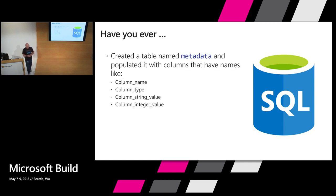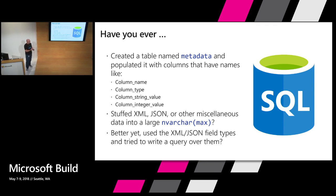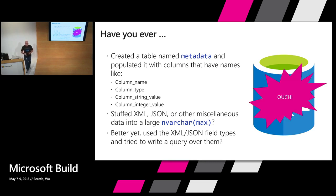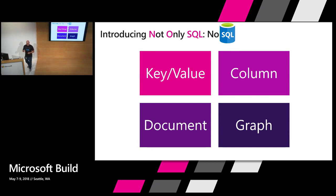Has anyone ever found themselves creating a table with column names and integer and string values, basically trying to store random metadata? Or maybe you've serialized objects and stored them in a huge string field, or used XML and JSON field types. If you've been doing this in your SQL database, there might be a better approach — a different approach for that data. It's a common misconception that NoSQL means no SQL is allowed. It's really 'not only SQL.'